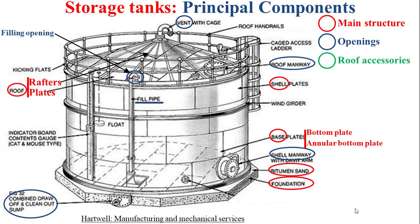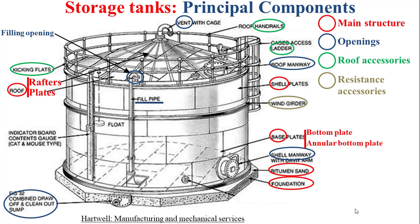For the roof we also have roof accessories. We have the ladder permitting access to the roof, and we have the handrails in association with the kicking plates to ensure the safety of workers when they are on the roof. The storage tanks also present resistance accessories such as the wind girder, permitting the storage tank to resist against wind load. They also present level indication accessories such as a float in association with an indicator board to indicate the level of the stored product within the tank.